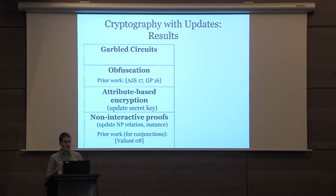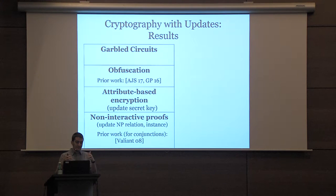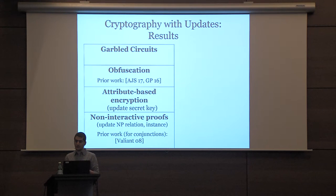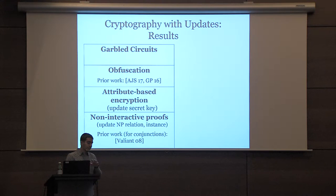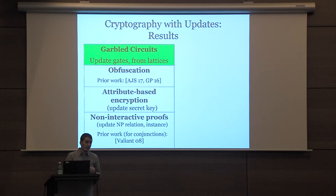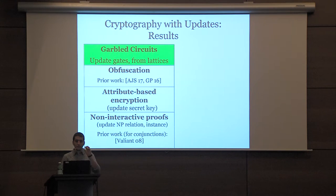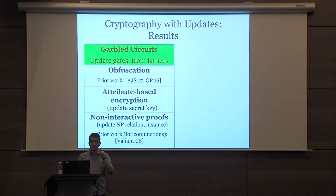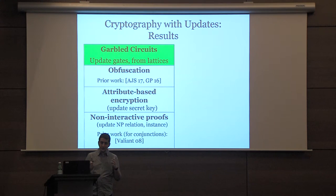This problem has only received limited attention, mainly in the setting of obfuscation — Prabanjan is going to talk about some of that work today. But basically, these types of questions haven't really been studied before. In this work, we show how to do updatable garbled circuits, which allows you to change any gate of the circuit, spending time proportional to the number of gates you're going to change. We can build this from lattice assumptions, like learning with errors.